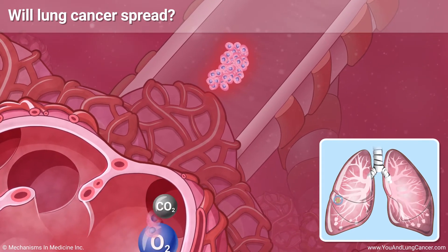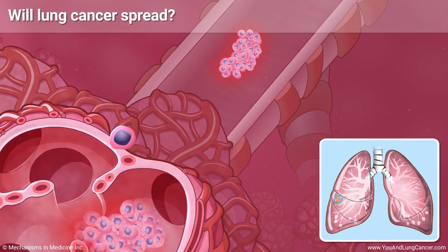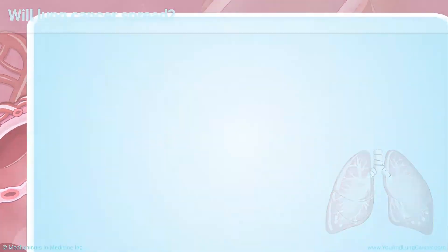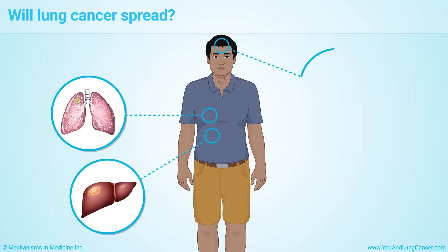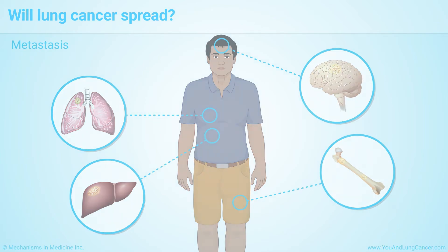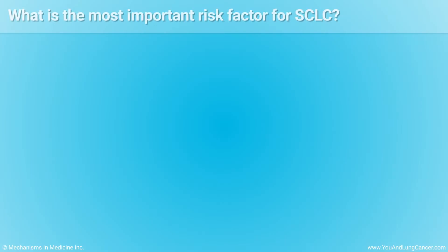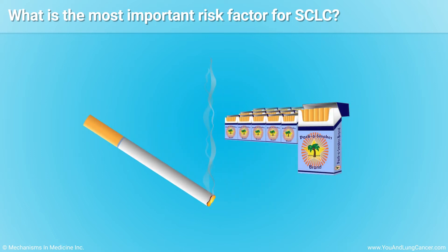If a cancer isn't completely killed or removed, it can spread to other organs. A cancer that has spread to other organs is called a metastasis. Cigarette smoking is the biggest risk factor for small cell lung cancer. The risk increases with the more years you have smoked and the more packs per day you smoke.